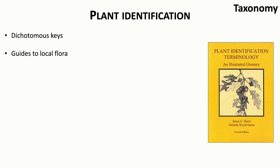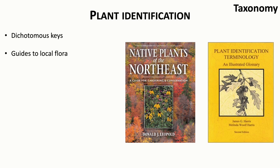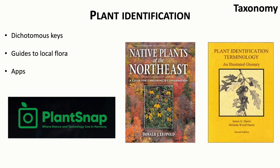Some of you that started this course with a strong foundation in botany might be equipped to use a key, but just with the topics we've covered these past few weeks, it could be difficult to understand and apply the terminology. For those interested in gaining the vocabulary to use such keys, I highly recommend the book Plant Identification Terminology. Another option is a book describing local flora, like a guide to native plants of the northeastern United States — often with lots of pictures in user-friendly formats. And a great option for when you're in the field is to use an app, like Plant Snap, which uses incredible technology to identify plants given a photo.